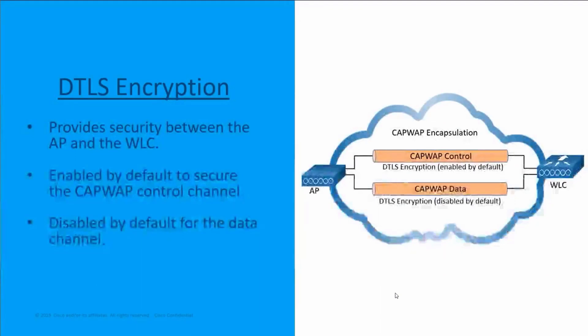Next is DTLS encryption, the Datagram Transport Layer Security encryption. DTLS is a protocol that provides security between the access point and the wireless LAN controller. This allows them to communicate using encryption, and it prevents eavesdropping or tampering from man-in-the-middle attacks.